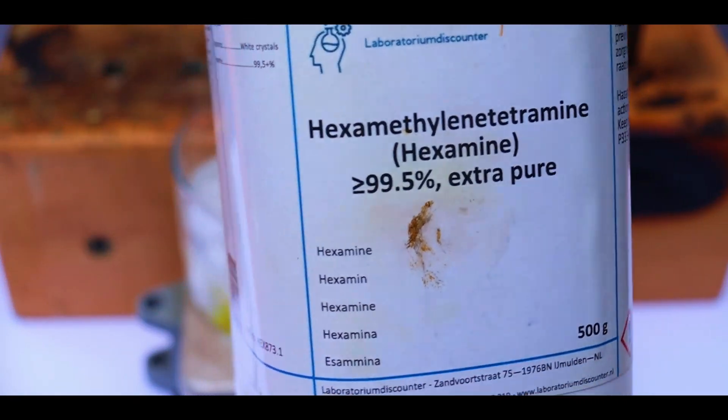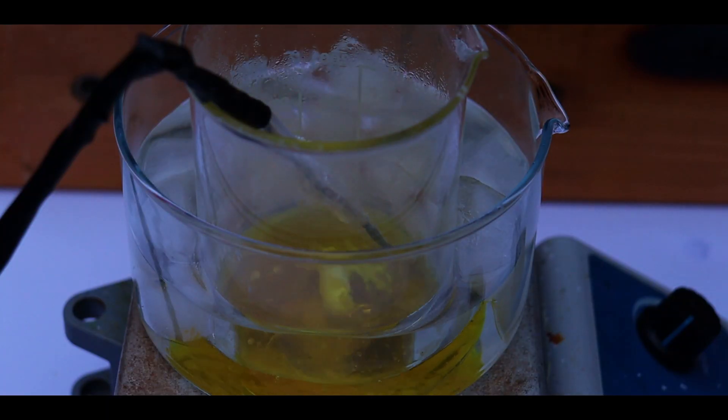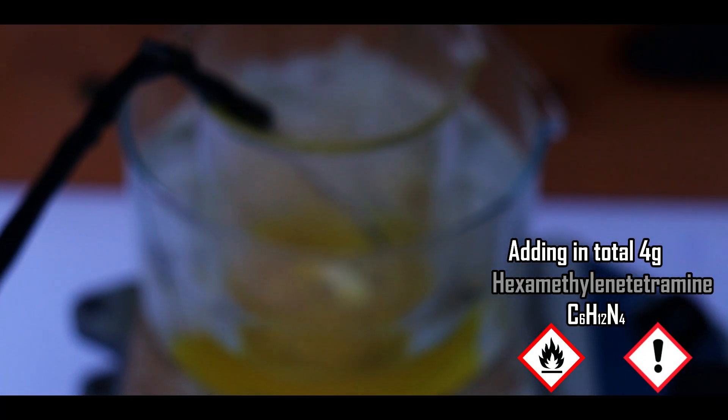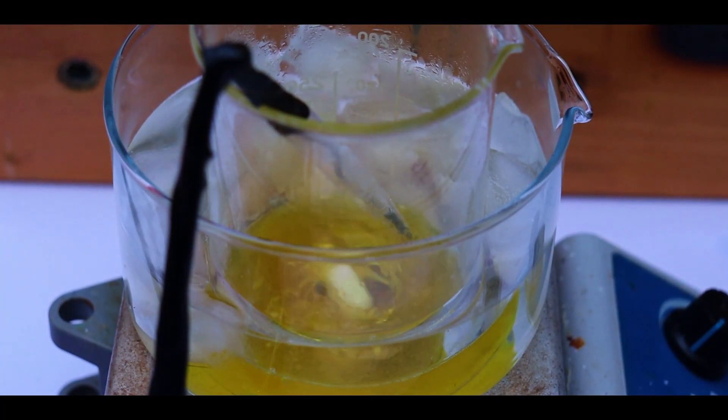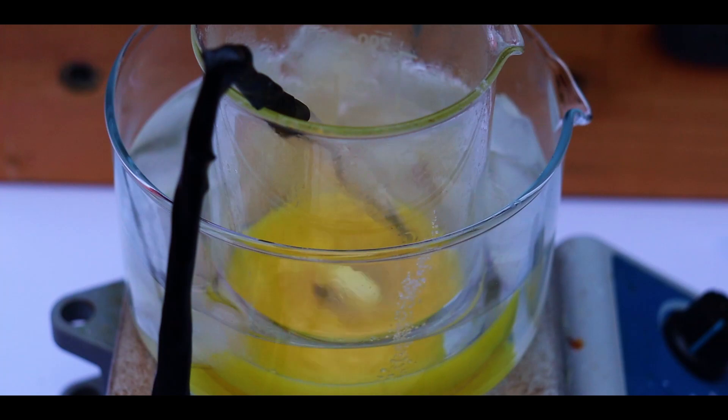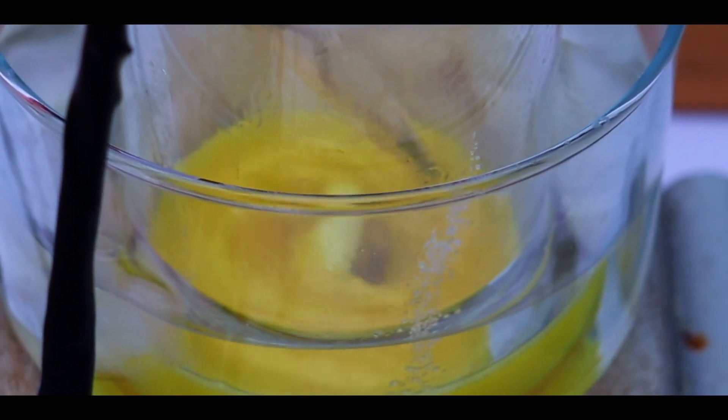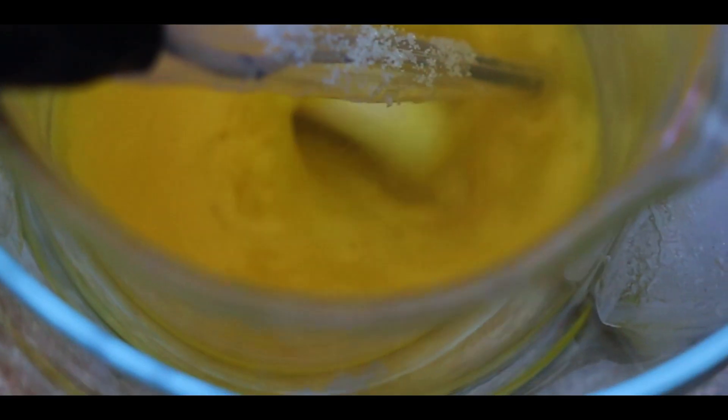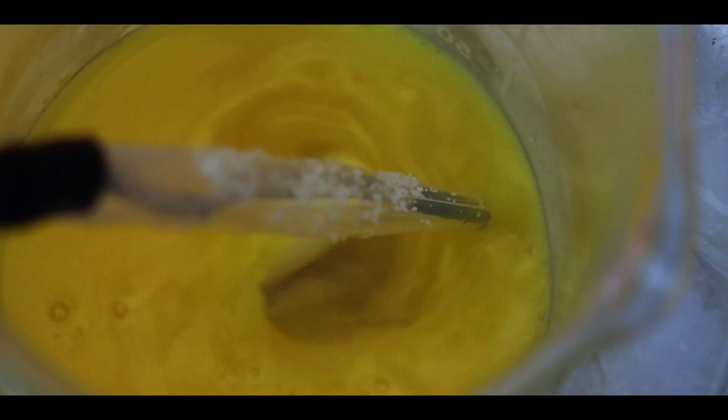we can start to add in the hexamine. Hexamine is this heterocyclic amine, and it looks like a white crystalline solid. Now we need to very slowly add the hexamine to acid and nitrate mix and monitor the temperature. For best results, the temperature should be kept below 15 degrees C. After addition of hexamine, you can observe some bubbling. This is not boiling, but it is normal, and just reflects that reaction has started. Most likely, those are bubbles of nitrogen and carbon dioxide.